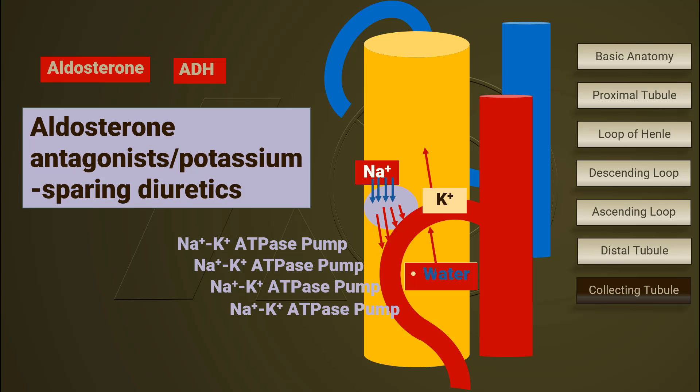Aldosterone antagonists slash potassium sparing diuretics work right here at the collecting duct and tubule, stopping reabsorption of sodium and water, as well as prohibiting excretion of potassium.